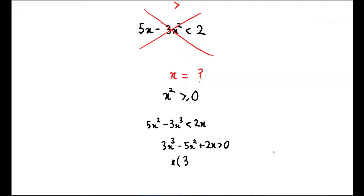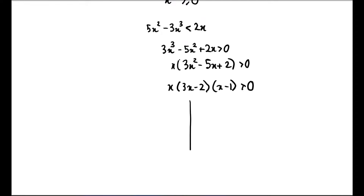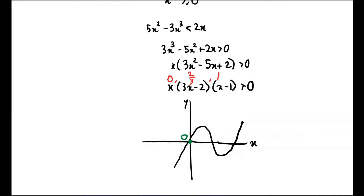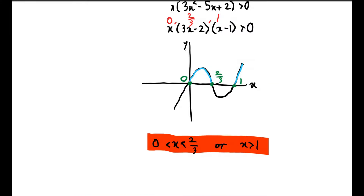We factor out x to get x(3x² − 5x + 2) > 0, which factorizes nicely to x(3x − 2)(x − 1) > 0. We should graph this to find the regions satisfying our inequality. The roots are 0, ⅔, and 1. The regions above the x-axis satisfy the inequality, giving our final answer: 0 < x < ⅔ or x > 1. Had we multiplied by x instead of x², we would have got the question completely wrong.